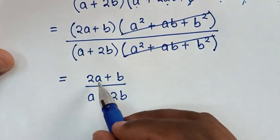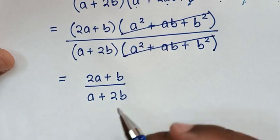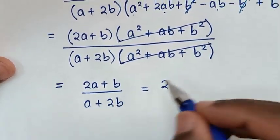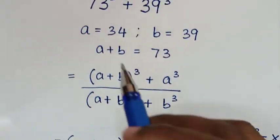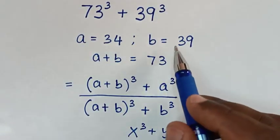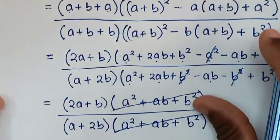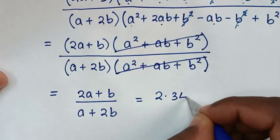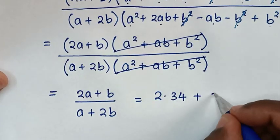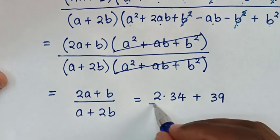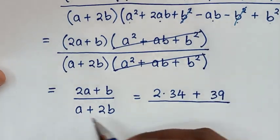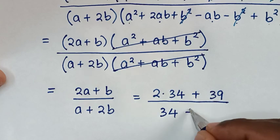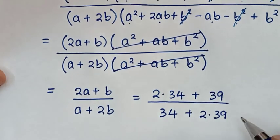Then, from here, we substitute the values of A and B into our equation. So, it will be equal to 2A plus B. We recall A is 34 and B is 39. So, it will be 2 times A — A is 34 — then plus B, which is 39. Then, over A, which is 34, then plus 2 times B, which is 39.